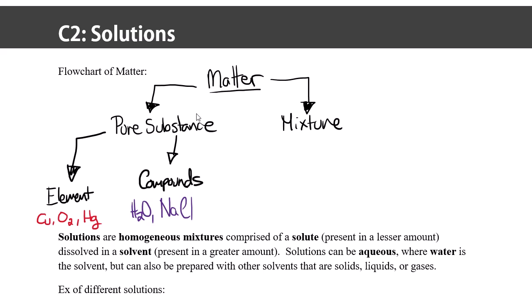Now on the mixture side, I want to decide whether it's uniform composition or whether it's not. So can I see individual parts? Can I easily physically separate the parts from one another? If I could see different parts inside the mixture, then it's a heterogeneous mixture.